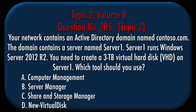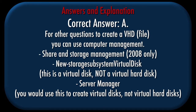Question number 105, Topic 2. Your network contains an Active Directory domain named Contoso.com. The domain contains a server named Server1 running Windows Server 2012 R2. You need to create a 3TB Virtual Hard Disk (VHD) on Server1. Which tool should you use? A. Computer Management. B. Server Manager. C. Share and Storage Management. D. New Virtual Disk. Correct answer: A. Explanation: To create a VHD file, you can use Computer Management.